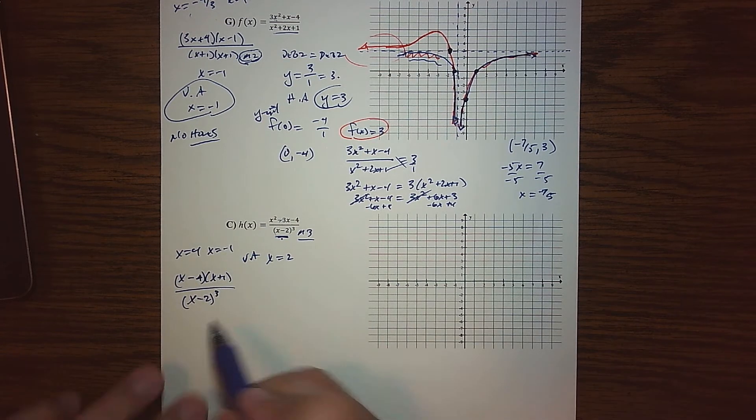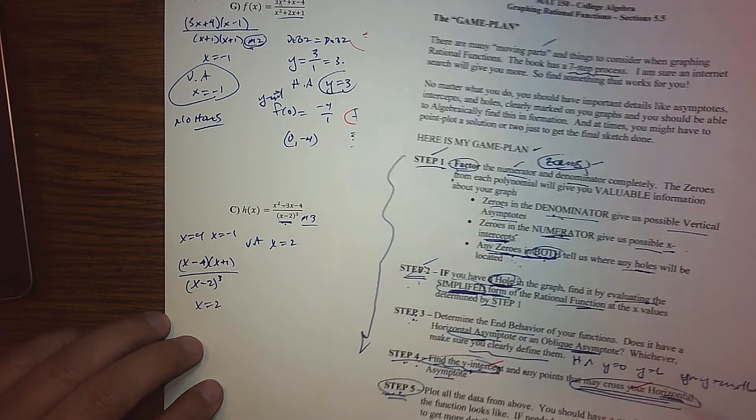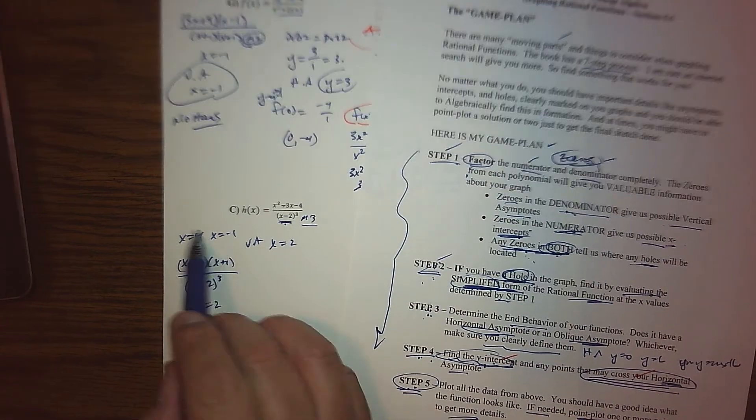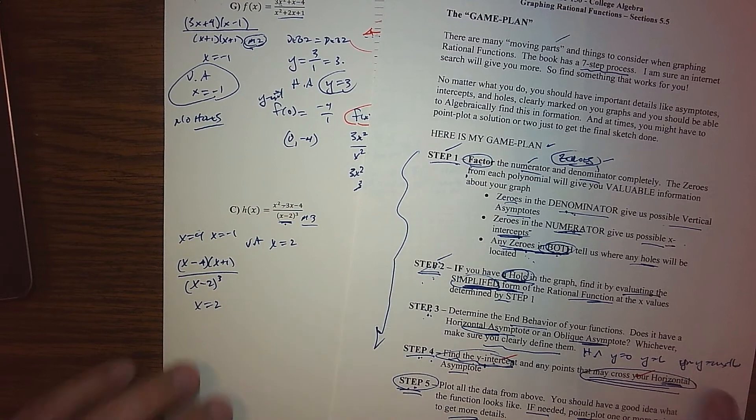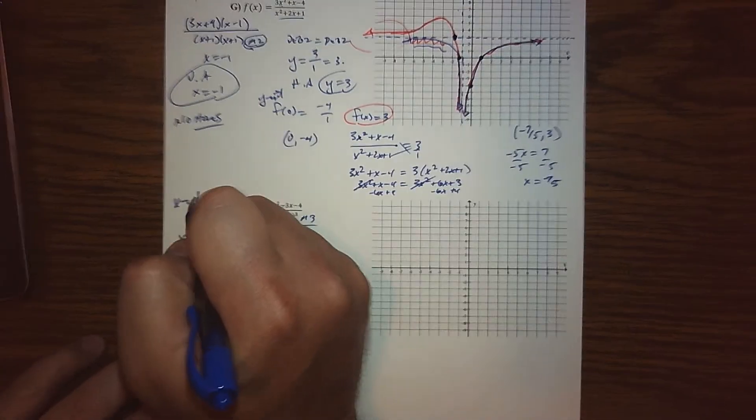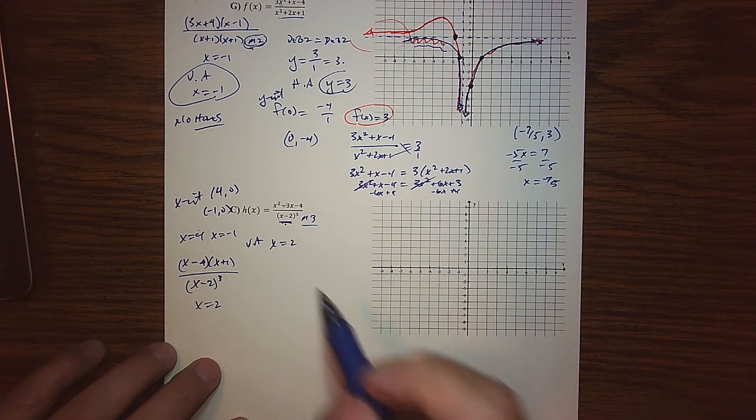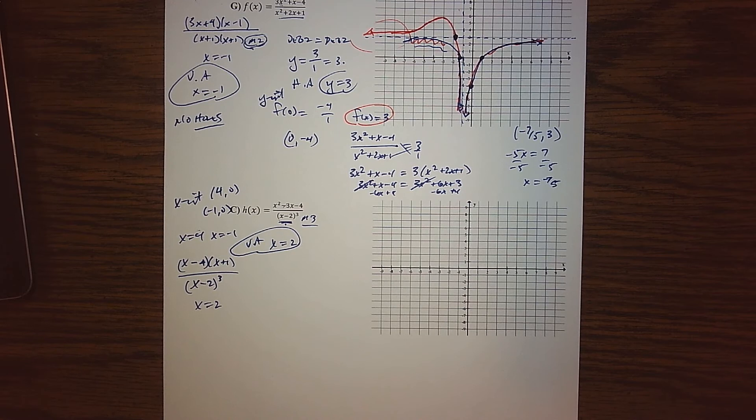All right, so my zeros upstairs are 4 and negative 1, respectively. My zero down on the bottom is 2. So if I follow along with my step one and step two, there's no common zeros, there's no common factors, so no simplification.